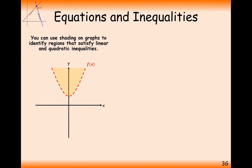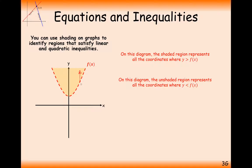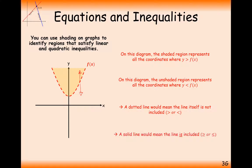Hopefully this is familiar to you from GCSE. When we're shading a region — in this case the yellow part — this is when the y-coordinates are bigger than the f(x) line. The dotted line represents y equals f(x), and the shaded yellow region is where the y-coordinate is bigger than the function. The unshaded part is when the y-coordinate is less than the values on this line. A dotted line means points on the line are not counted inside the region.